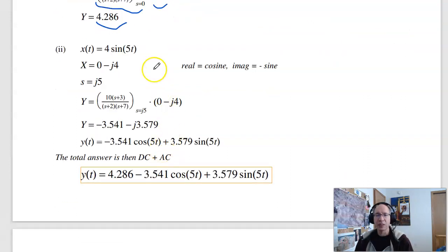Repeat for the AC input. The input is 4 sine of 5t. In phasor form, that's 0 minus j4, 0 cosine, 4 sine. The frequency is 5 radians per second. This is the gain everywhere. All I care about is what's the gain at 5 radians per second times the input at 5 radians per second gives you a complex number. What that means is the real parts cosine minus j is sine.